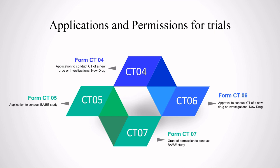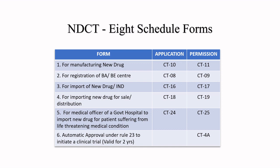You should clearly remember which particular form stands for the application and which stands for the permission. These forms are elaborately mentioned in Schedule 8. For manufacturing of a new drug, you apply through Form CT08 and receive approval through Form CT11. To register a BA/BE center, you apply through Form CT08 and get approval through Form CT09. To import a new drug or investigational new drug from abroad, you complete Form CT16 and receive approval through Form CT70.